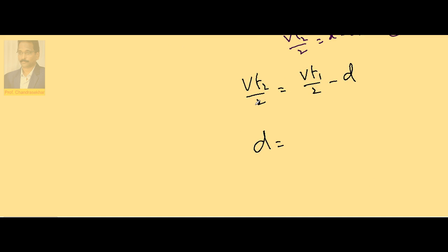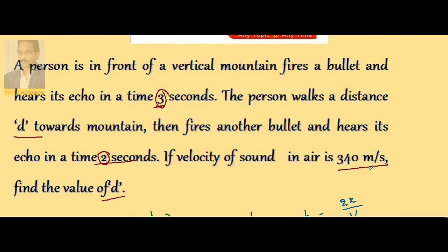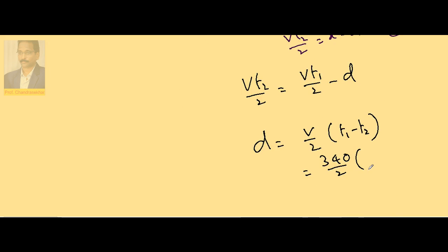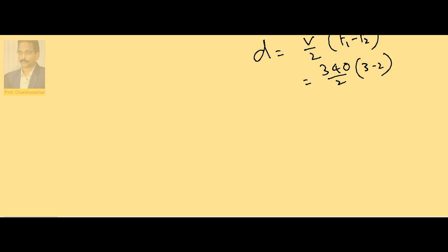v is given as 340, t1 and t2 - initial time 3 seconds, final time is 2 seconds - so it is 3 minus 2. Therefore here I can cancel 340 with 2, giving 170. 3 minus 2 is 1.